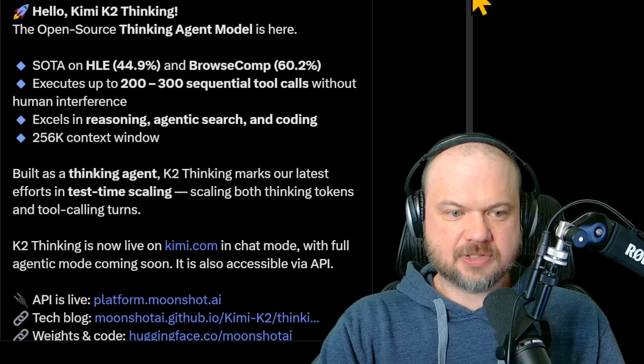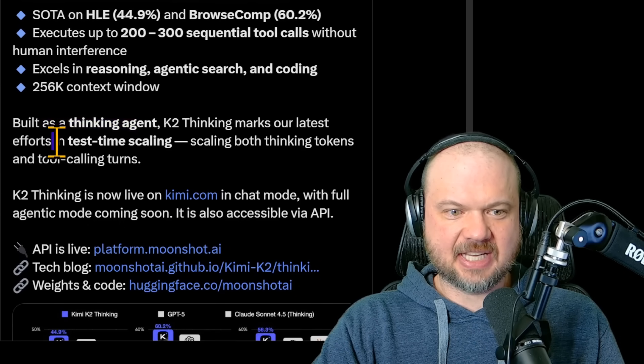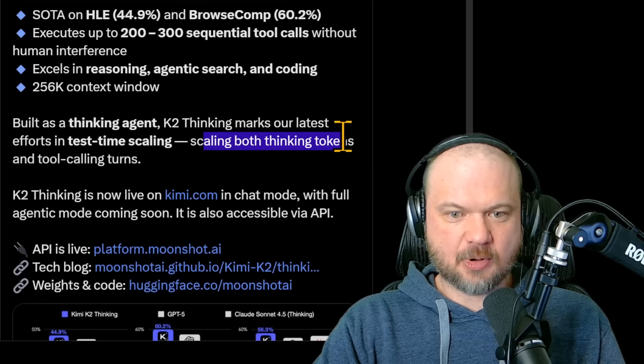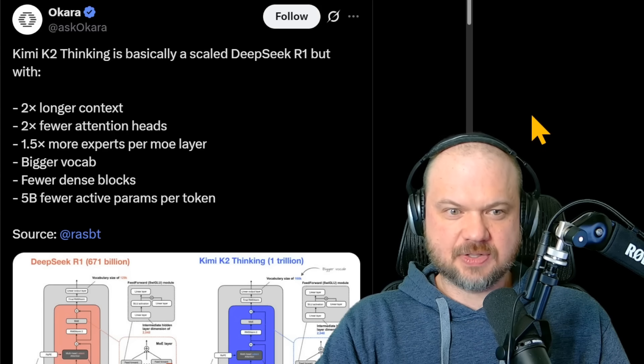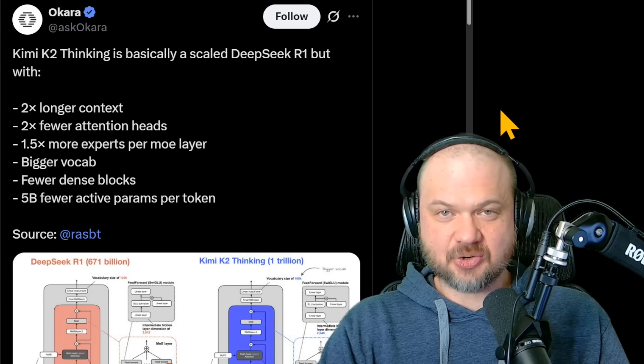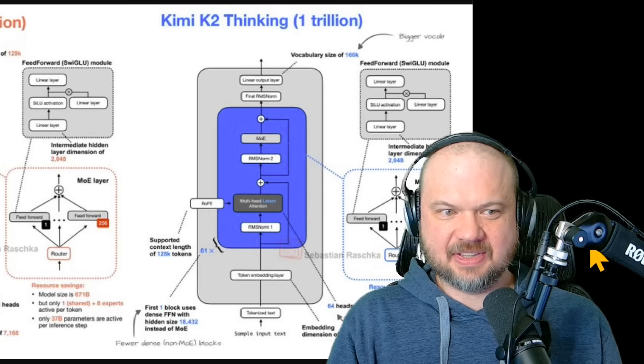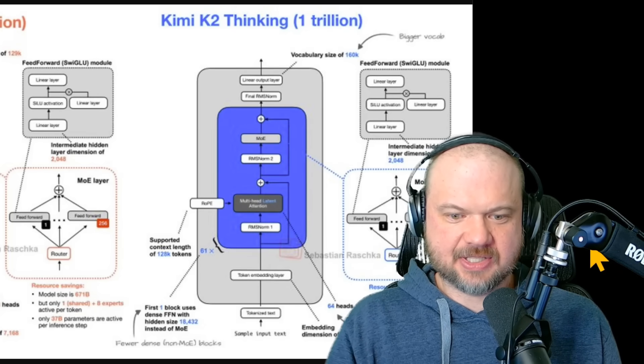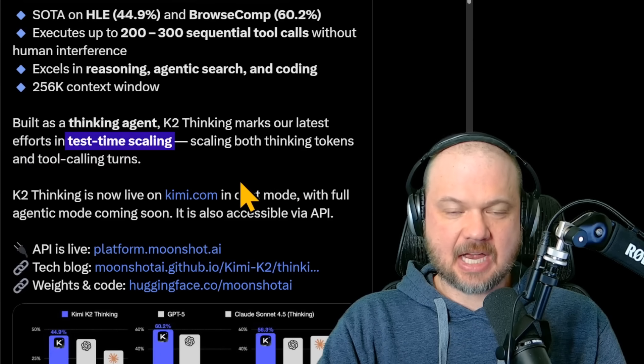Here's where it gets interesting. First of all, notice it's saying built as a thinking agent. K2 thinking marks our latest effort in test time scaling, scaling both thinking tokens and tool calling churns. Now, Kimi K2 thinking is basically a larger upscaled version of DeepSeek R1, and there are a few noticeable differences. But the thing that really caught my attention here is when they're saying what they're experimenting with, and that is the test time scaling.